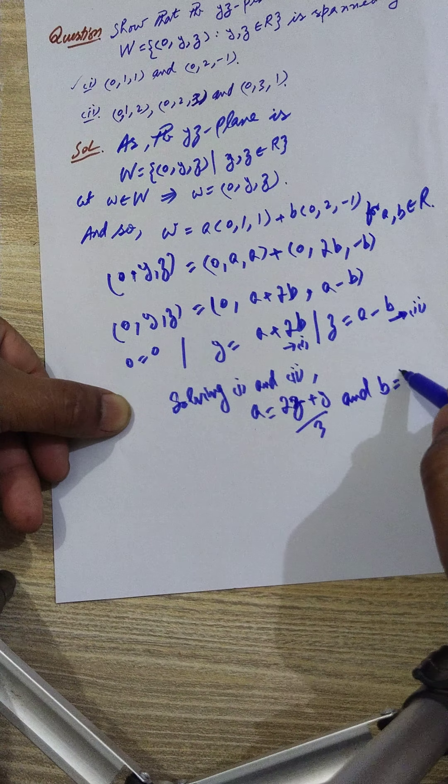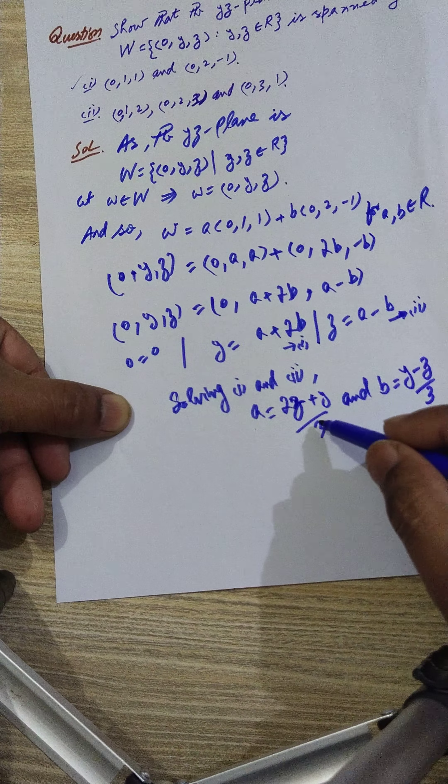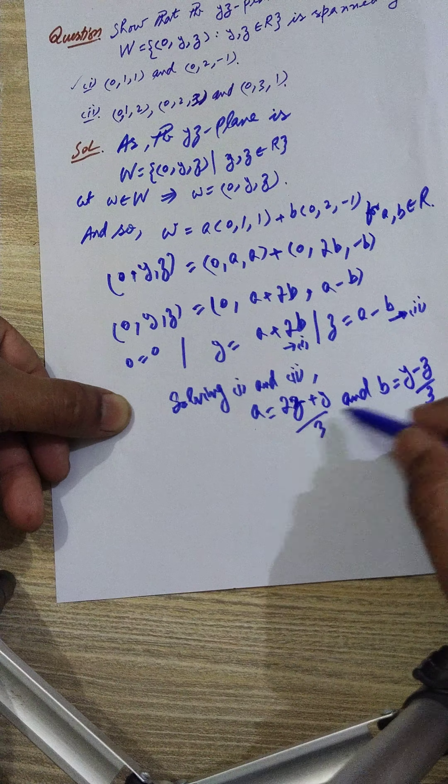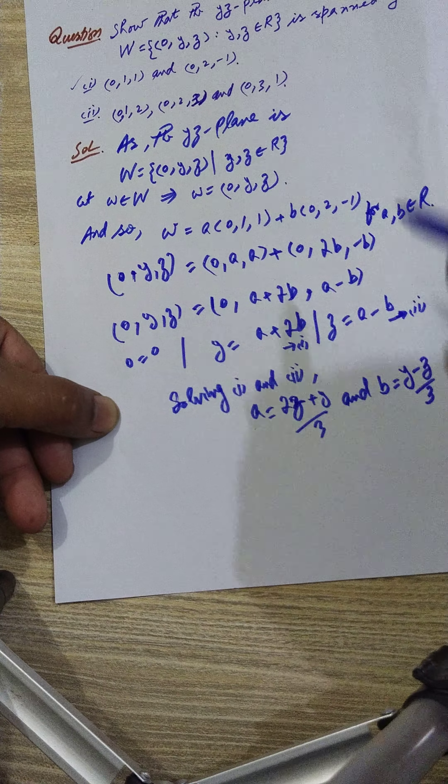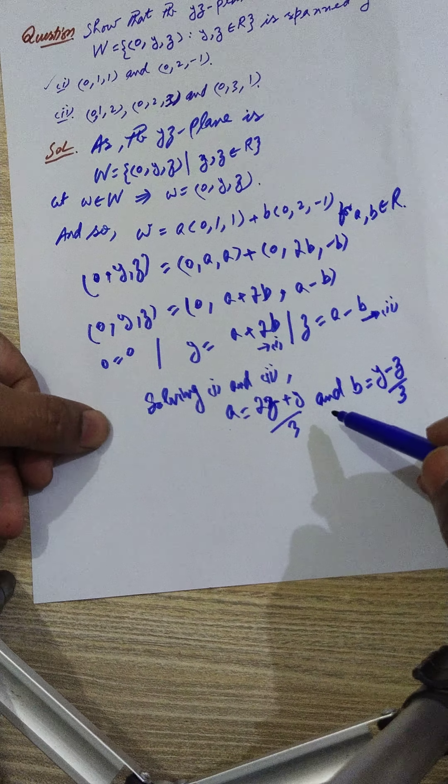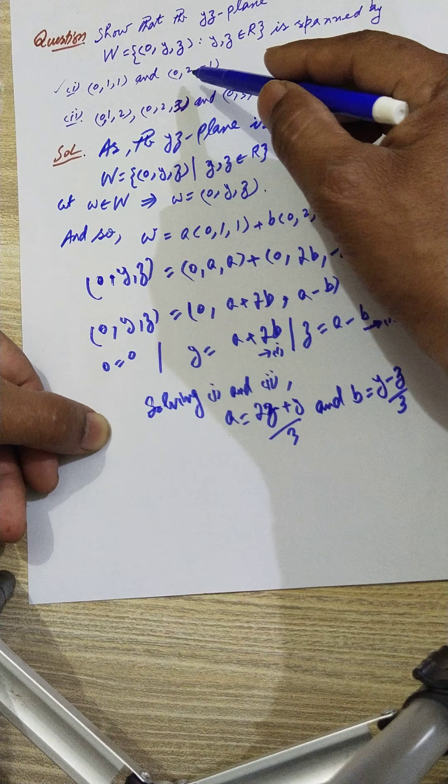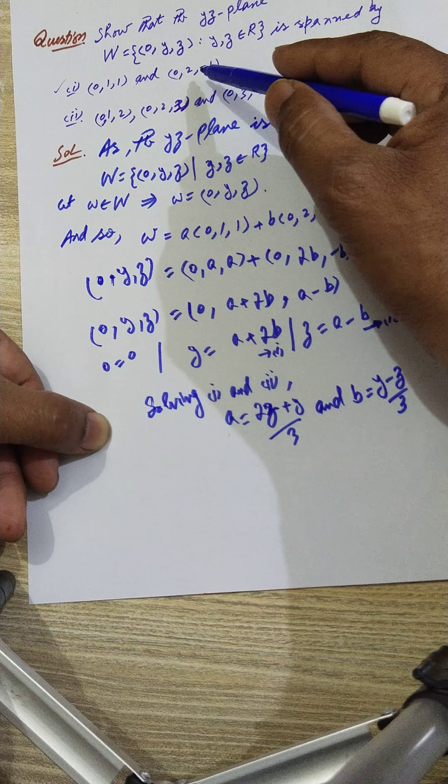a comes out to be, well x is 0, so 2z plus y over 3, and b comes out to be y minus z over 3. Look at both: here also there's no x, here also no x, and in the YZ plane you know there is no x.